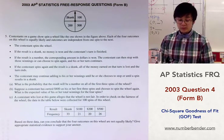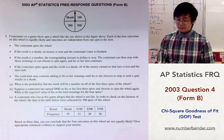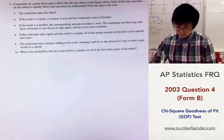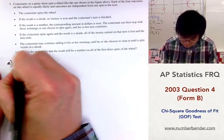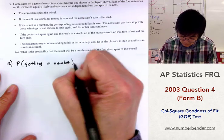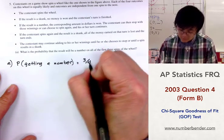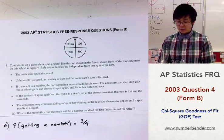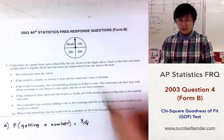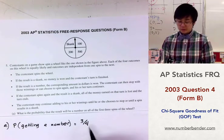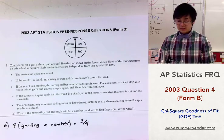Let's start with problem part A: finding the probability of getting a number — winning money — on three consecutive spins. There are four different possibilities when spinning the wheel, so the probability of getting a number is three out of four. For three consecutive spins, we multiply three-fourths by itself three times.